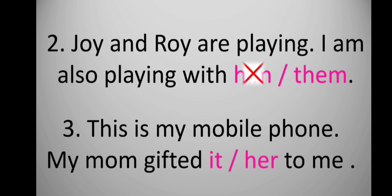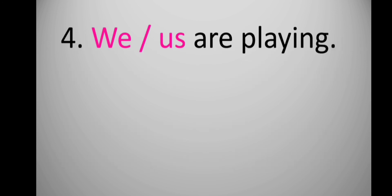Next: 'This is my mobile phone. My mom gifted it or her to me.' We are talking about a mobile phone, which is an object, so we use 'it.' The wrong pronoun is 'her.' The answer is: 'my mom gifted it to me.' Next: 'we or us are playing.' The pronoun is the subject of the sentence, so we use 'we.' The wrong pronoun is 'us.' The answer is: 'we are playing.'